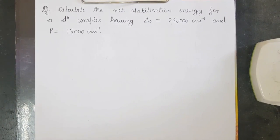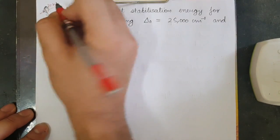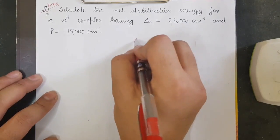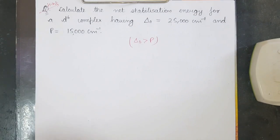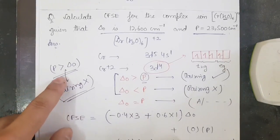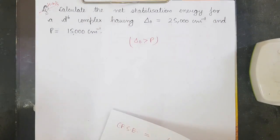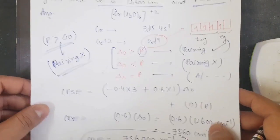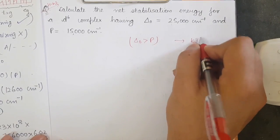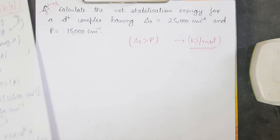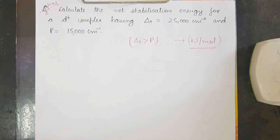A homework question is given — note that in this case Δ₀ > P, unlike the previous example where P > Δ₀. This covers both strong field and weak field cases that appear in examinations. Please mention your answer in the comment section in kJ/mol. Don't forget to like the video, ask doubts in the comments, thank you and all the best!